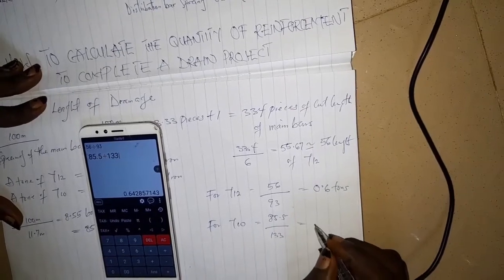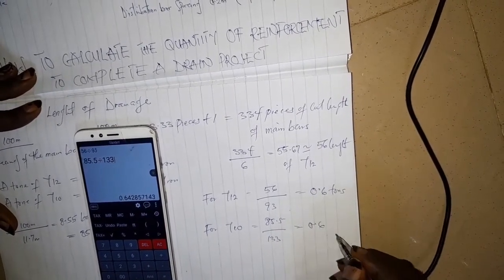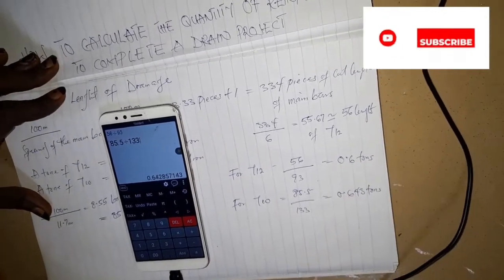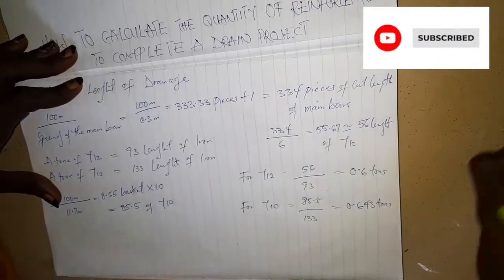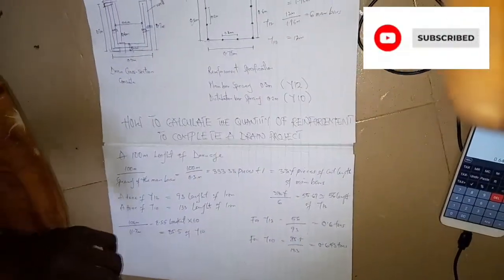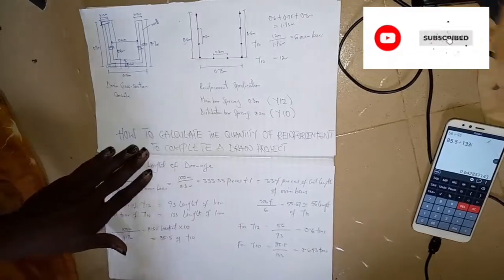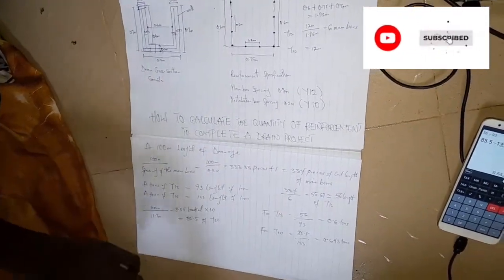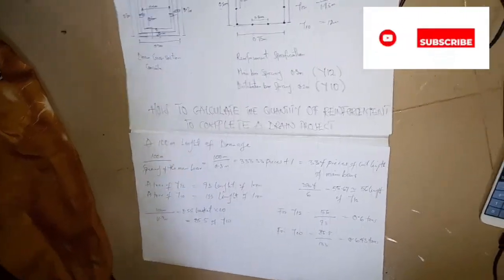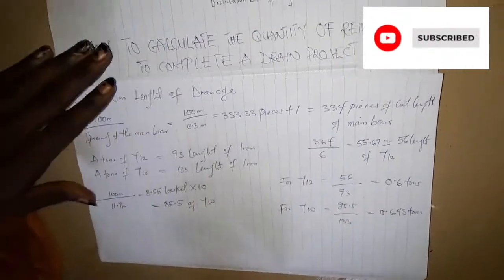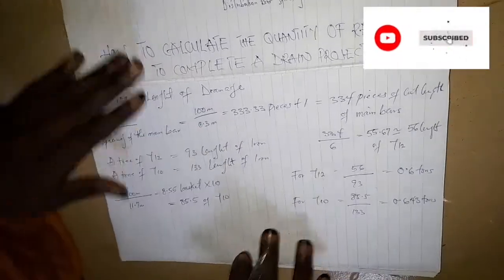That is how you calculate the quantity of reinforcement to complete a 100-meter drainage for this specification. Subscribe to the Jerof Engineering channel to see notifications for more videos pertaining to engineering — road engineering, building engineering, and any aspect of engineering.